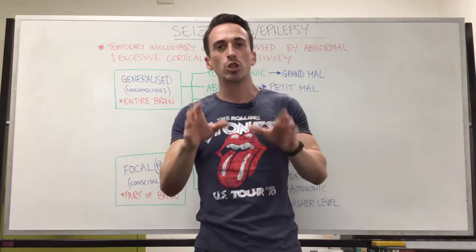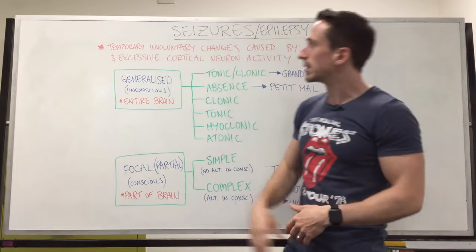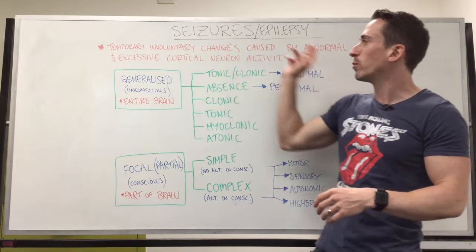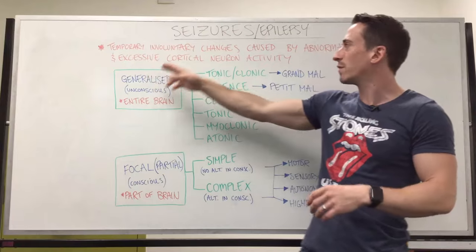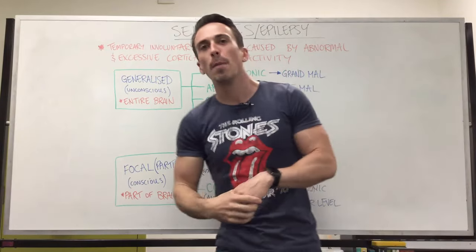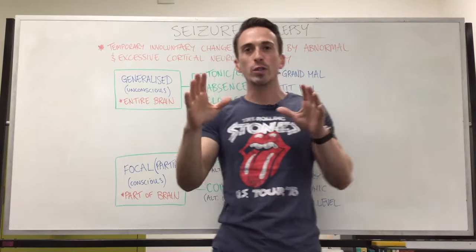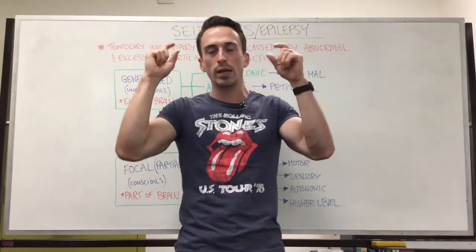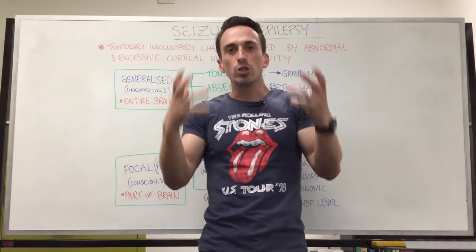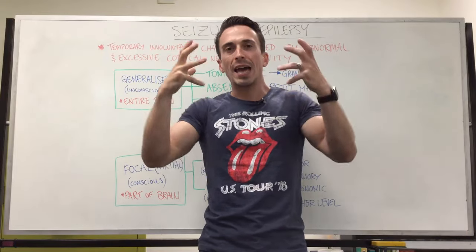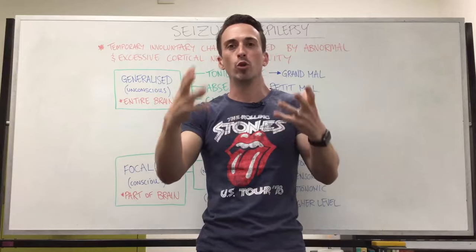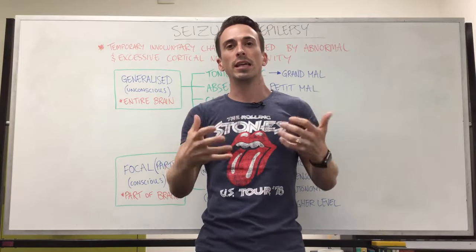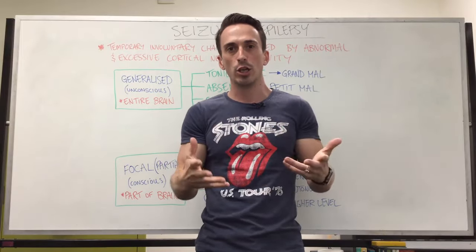The definition of a seizure is a temporary involuntary change caused by abnormal and excessive cortical neuron activity. Basically, the cortex — a couple of millimeters of your brain — has neurons within it, and if you have this excessive and abnormal misfiring of these neurons, that leads to a seizure.